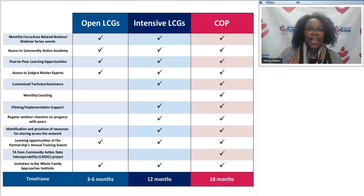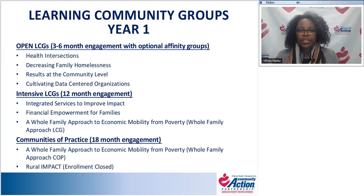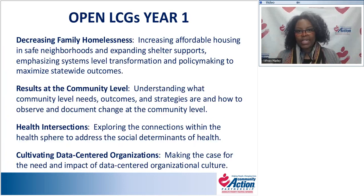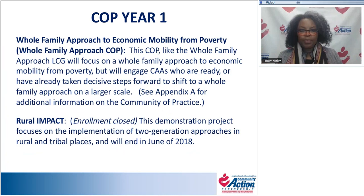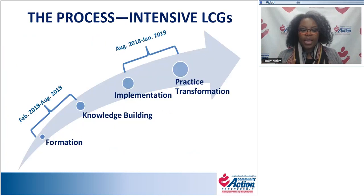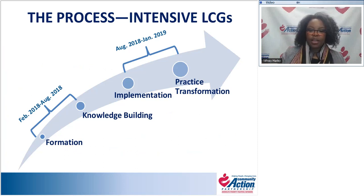Hopefully that gives you a sense of our overall framework. Now I'd like to talk a bit about our process, specifically for our intensive learning community groups. The groups will progress through four phases: formation, knowledge building, implementation, and practice transformation. Between February 2018 and August 2018, agencies will progress through the formation and knowledge building phases. Then between August 2018 through January 2019, they will progress through the implementation and practice transformation phases.